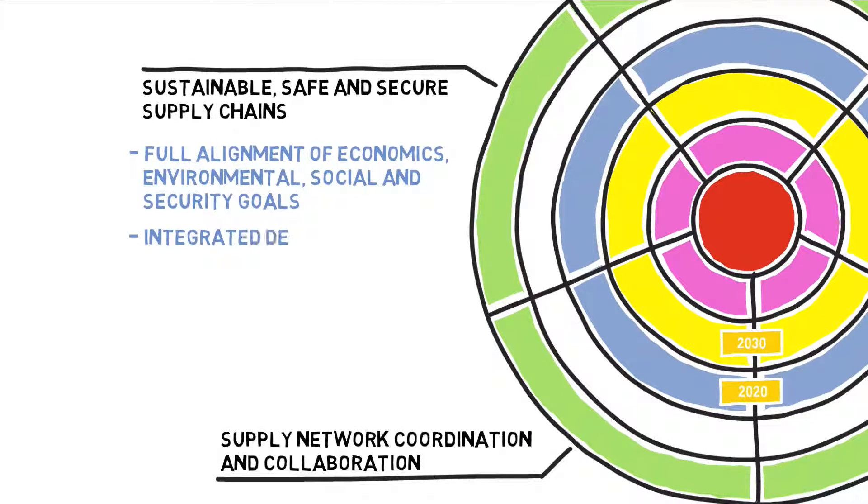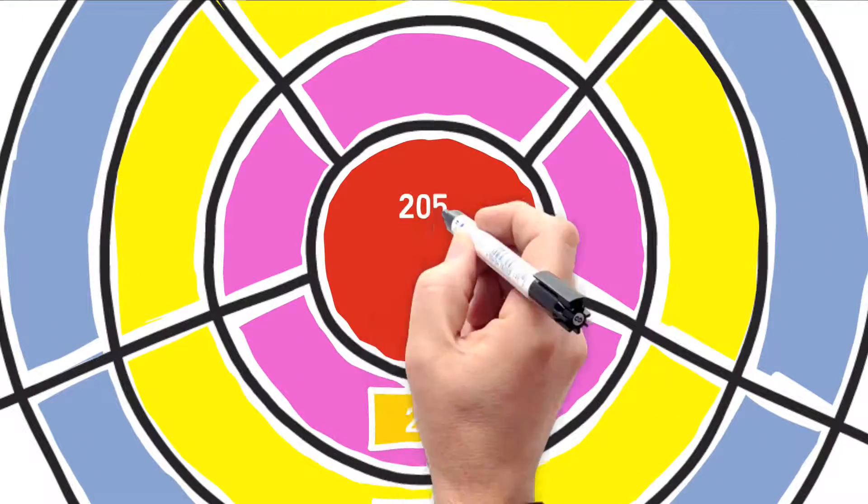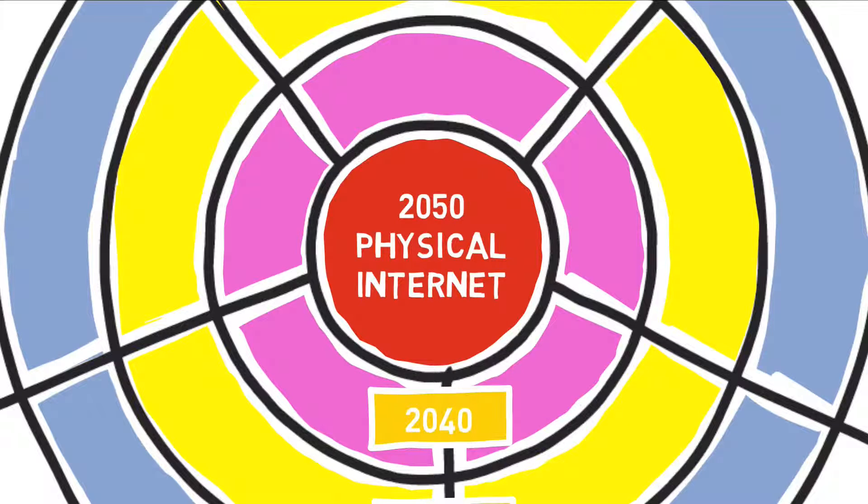Around 2030, integrated decision-making in end-to-end supply chain should be realized. In 2040, we'll have safe and secure supply chains for the circular economy. All culminating in 2050, when physical internet has become our new reality.